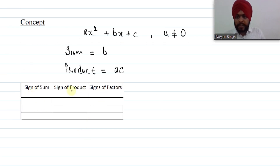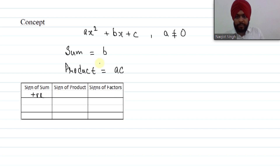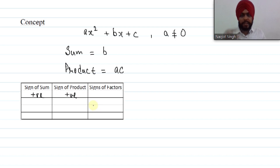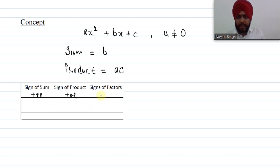Let us discuss the sign rules with the help of a table covering: sign of sum, sign of product, and signs of factors. The first case: if the sum is positive — meaning B is positive — and the sign of product is also positive, then since the product of two numbers is positive and their sum is positive, both factors must be positive and positive.